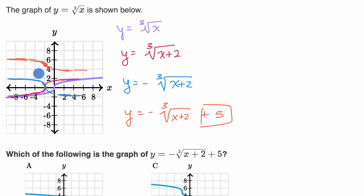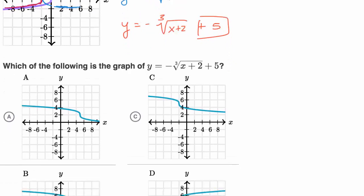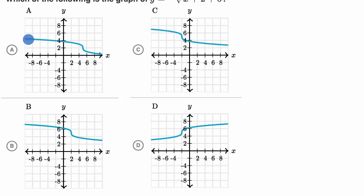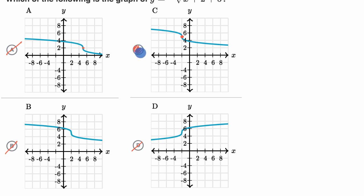The key point to look at is the point that in our original graph was at zero, zero — now it is going to be at negative two comma five. It also should be flipped, so on the left-hand side we have the top part, and on the right-hand side we have the part that goes lower. A, C, and B all have the left-hand side as the higher part and the right-hand side as the lower part. But we wanted this point to be at negative two comma five — A doesn't have it there, B doesn't have it there, and D goes in the wrong direction. Negative two comma five is indeed what we expected. So choice C.